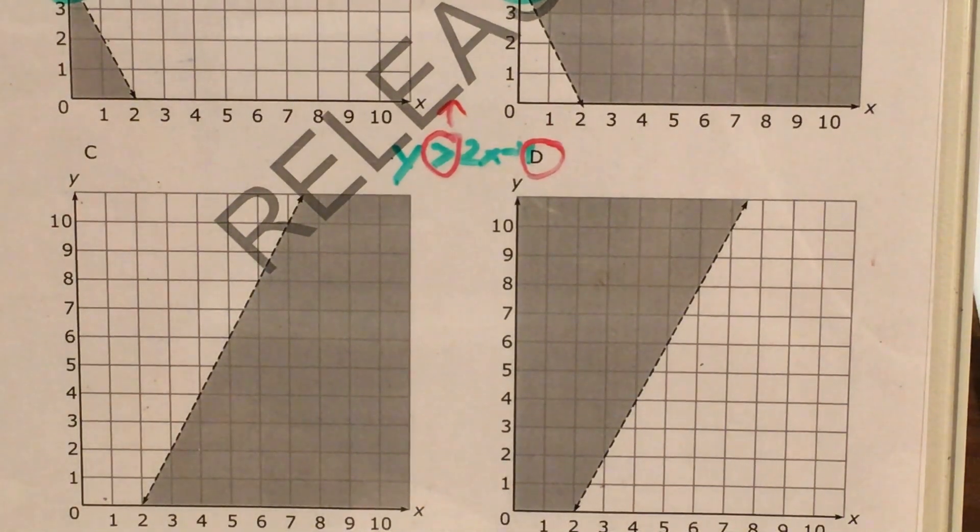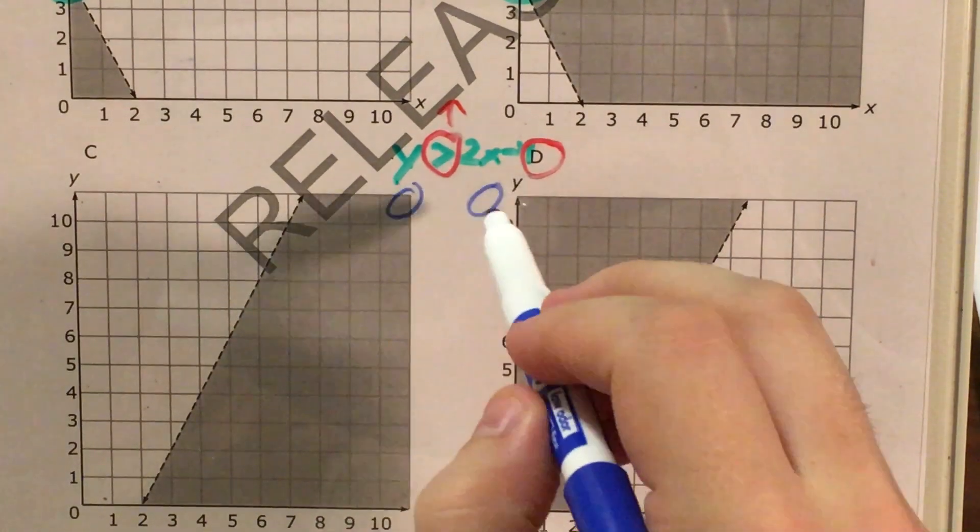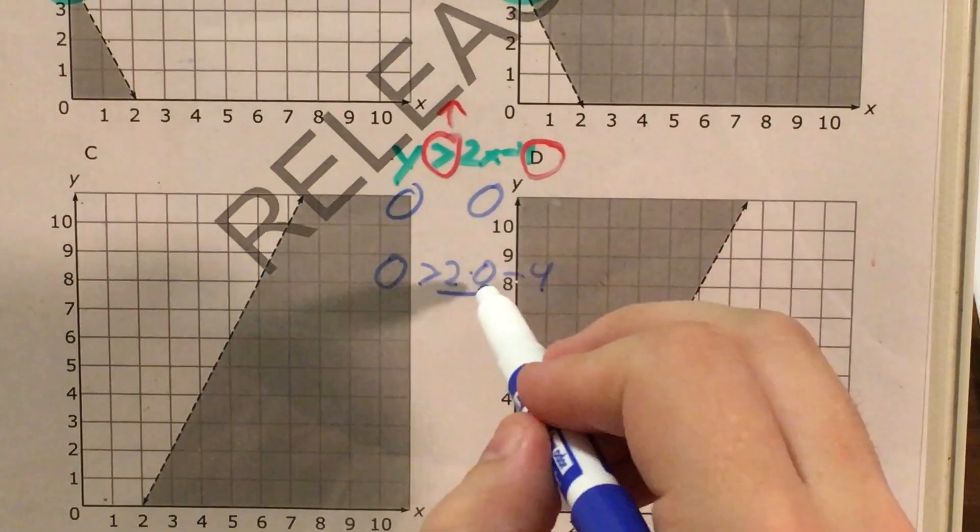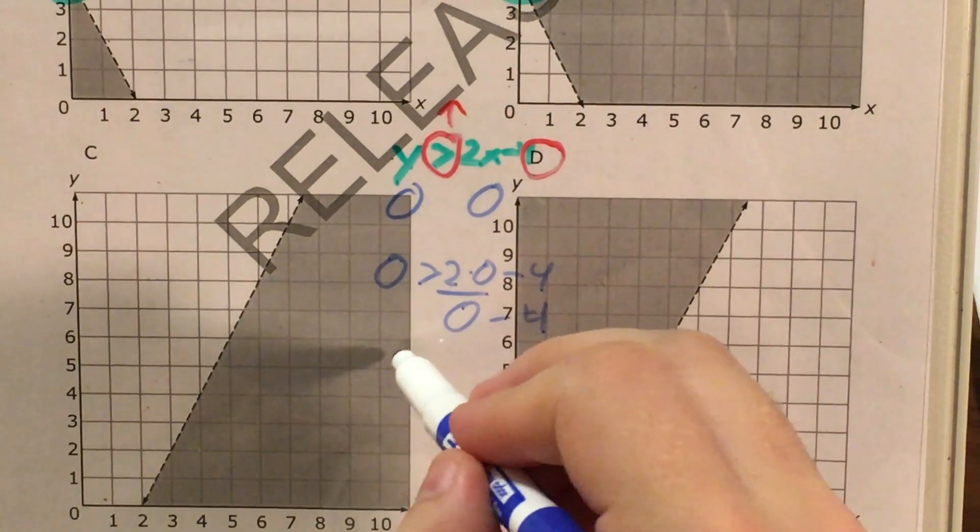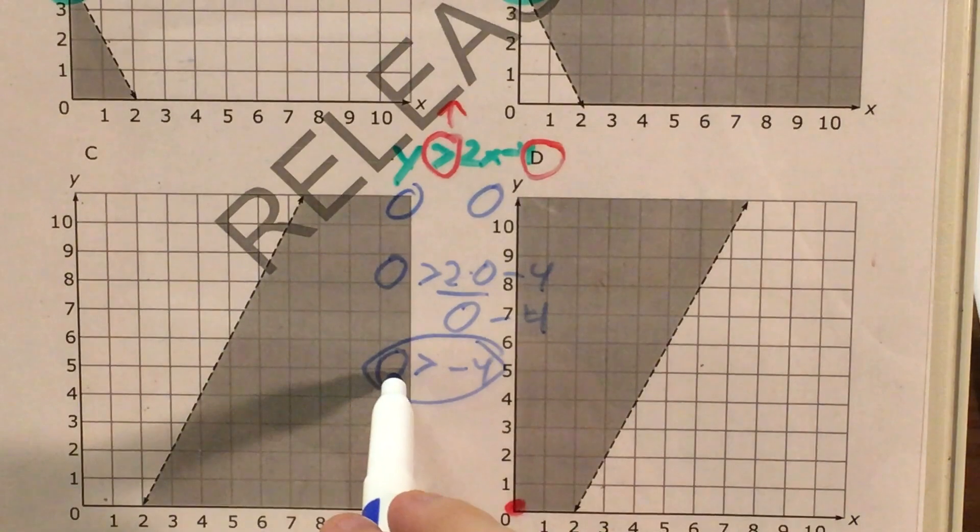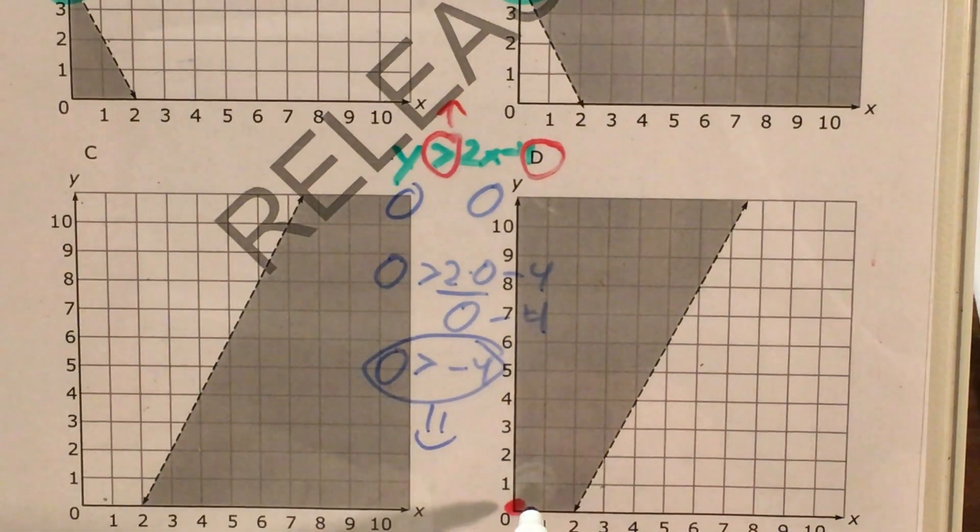And to go ahead and actually test some of these, the easiest ordered pair to test is 0, 0. If 0, 0 works, if I plug 0 in for x and 0 in for y and get something that makes the inequality true, then that's a pretty good sign that choice D works and choice C doesn't because you can see they actually shade opposite regions there. So if I plug in 0 for y and 0 for x, I'm wondering if 0 is greater than 2 times 0 minus 4. 2 times 0 is 0. 0 minus 4 is negative 4. And now that I've gone ahead and tested 0, 0, I'm happy with this because this is true. And since this is true, it shows me that 0, 0 has to be part of the solution set. And it shows me that D is, in fact, my answer.